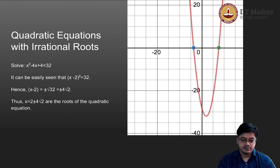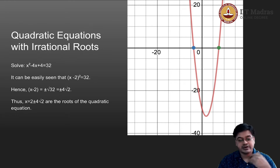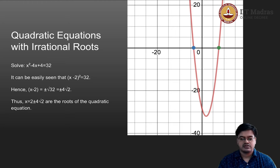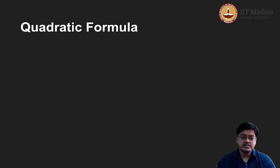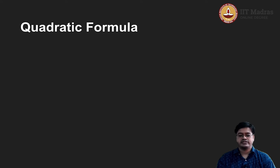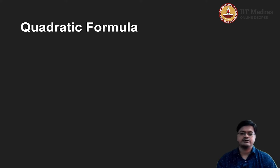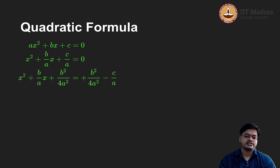Now let us explore the relation between the method of finding the roots of quadratic equations using completing the square and its connection with the quadratic formula. For this, let us take a general quadratic function equated to zero, that is ax squared plus bx plus c equals 0.